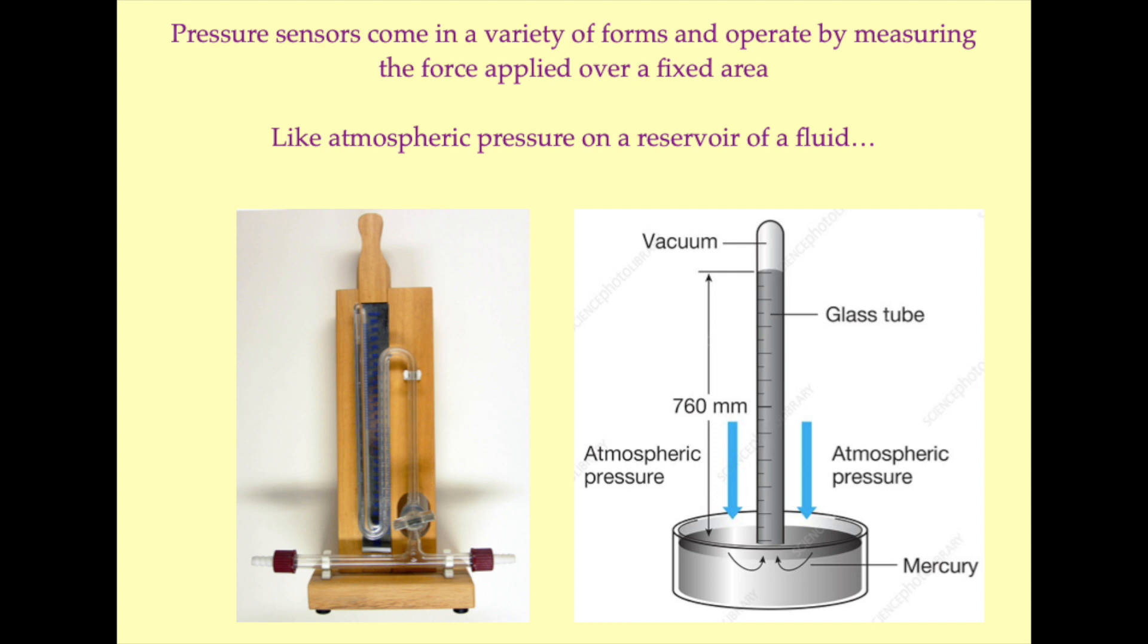In the case of a mercury barometer such as the one pictured here, gas pressure is applied to the surface of a reservoir of mercury, which is consequently displaced into an evacuated glass tube. The amount of mercury displaced into the tube is directly related to the gas pressure applied to the reservoir.